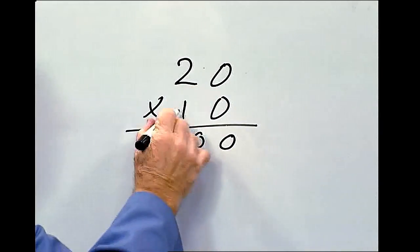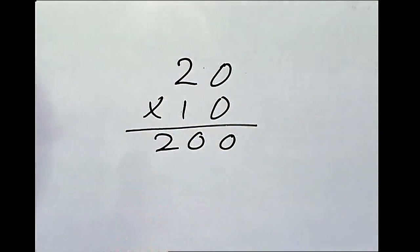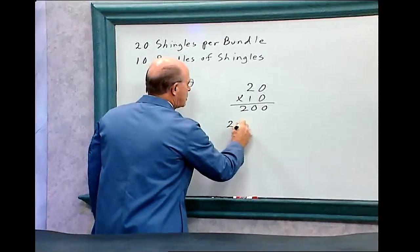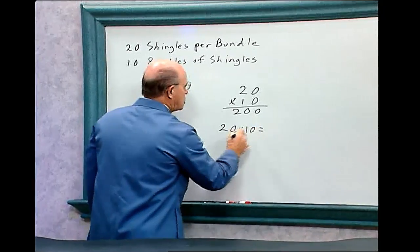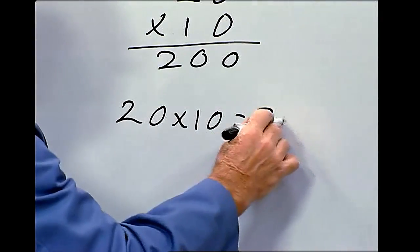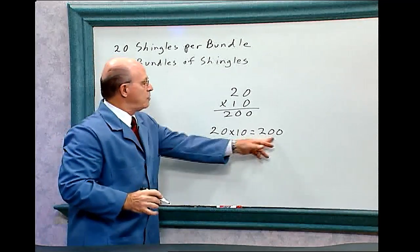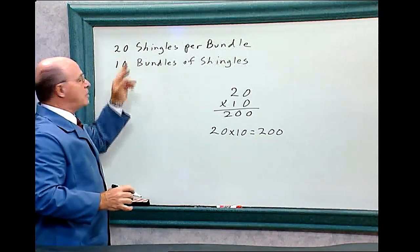Bring down the 0. 1 times 0 is 0. 1 times 2 is 2. But there's a faster way to multiply when you're multiplying by 10. This is 20 times 10. Just add a 0 to the 20, and that's 200. So there are 200 shingles in those 10 bundles.